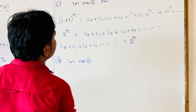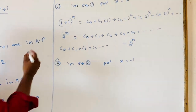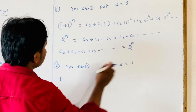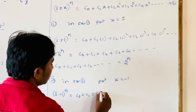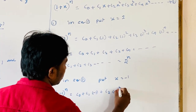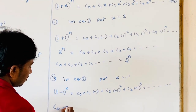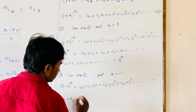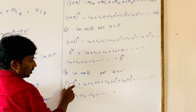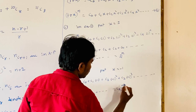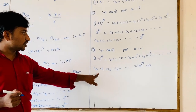To prove the second condition, in equation 1 put x = −1: (1−1)^N = C0 − C1 + C2 − C3 + ··· So 0 = C0 − C1 + C2 − C3 + ···. Hence C0 − C1 + C2 − C3 + ··· = 0 is proved.